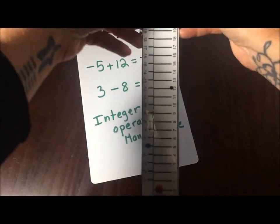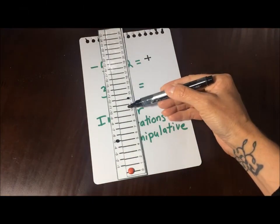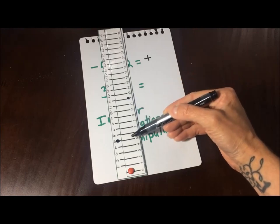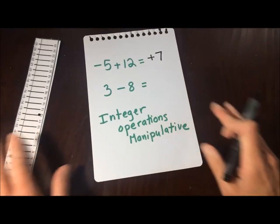Fold it in half. Count the spaces between. 1, 2, 3, 4, 5, 6, 7. So your answer is positive 7.